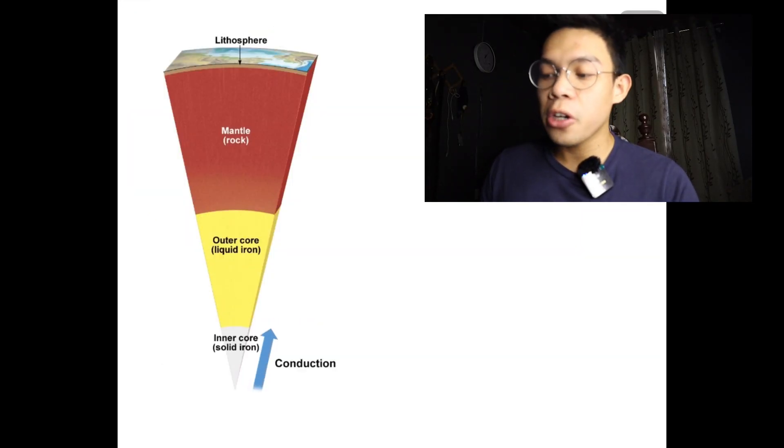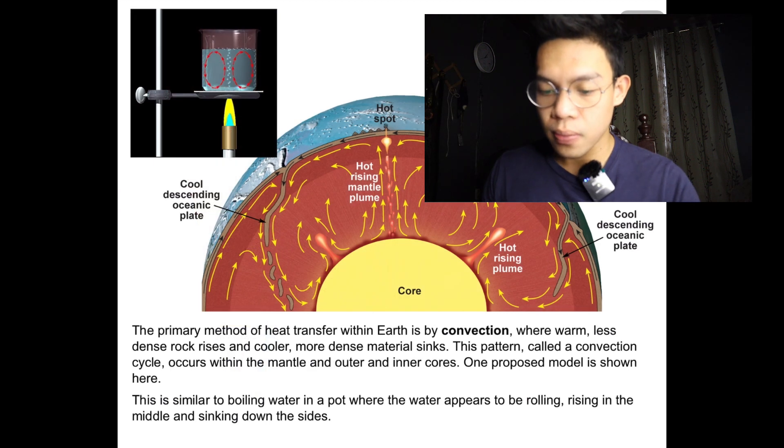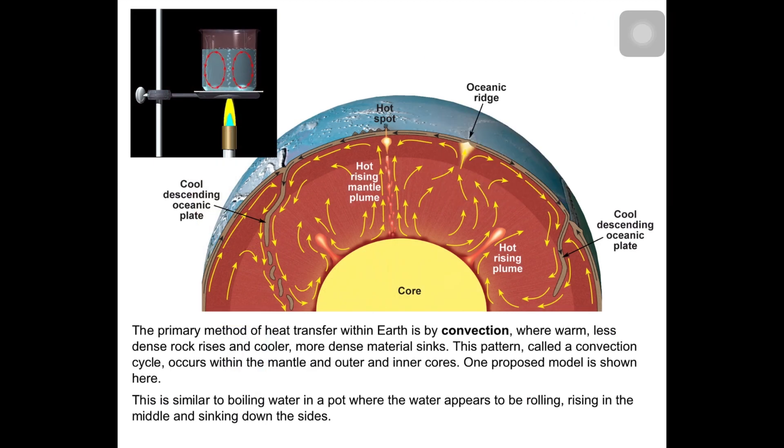Heat travels through Earth's interior by two different methods: convection and conduction. A third type of process, radiation, transports heat away from Earth's surface into space. The primary method of heat transfer within Earth is by convection, where warm, less dense rock rises and cooler, more dense material sinks. This pattern, called a convection cycle, occurs within the mantle and outer and inner cores. One proposed model is shown here. This is similar to boiling water in a pot, where the water appears to be rolling, rising in the middle, and sinking down the sides.